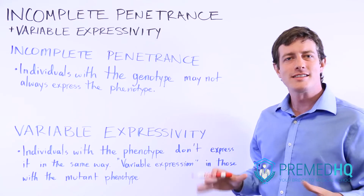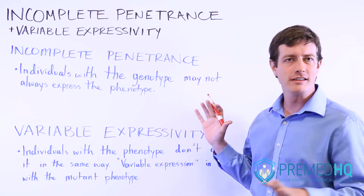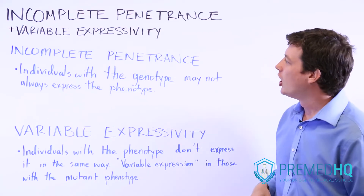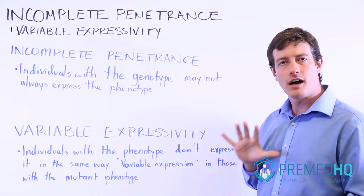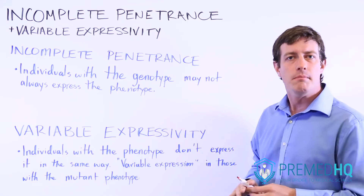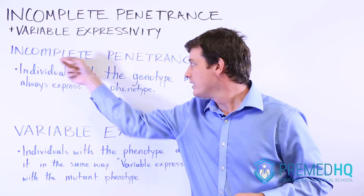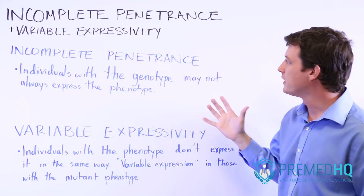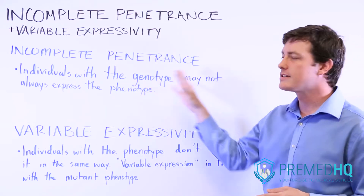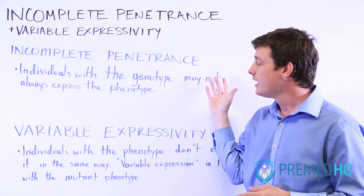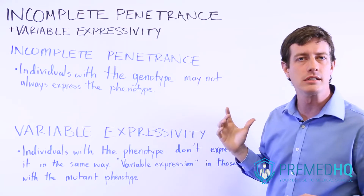Two concepts that cause deviation from your usual Mendelian laws of inheritance are incomplete penetrance and variable expressivity. Students often get these mixed up, and it's also possible to confuse incomplete penetrance with incomplete dominance. We'll talk about incomplete penetrance first, distinguish it from incomplete dominance, and then get to variable expressivity and the differences between the two.